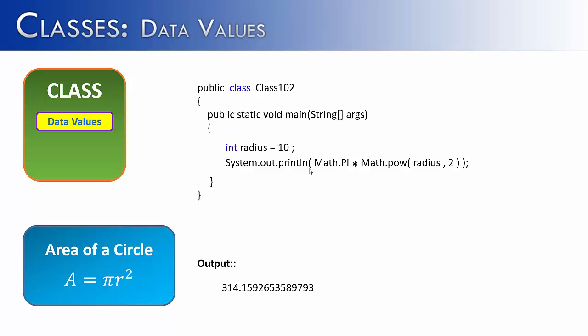And the area would be 314.159 so on and so forth. And we can obviously tell that Math.PI is an attribute because it is missing the parentheses. And Math.pow is a method because it has the parentheses after it.